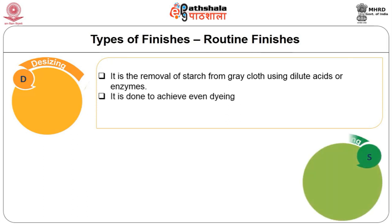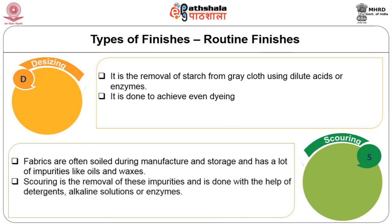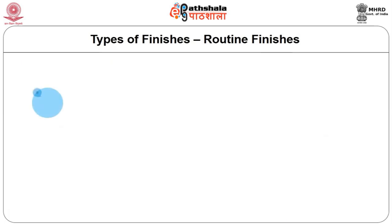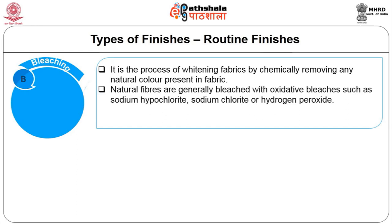Scouring or cleaning — fabrics are often soiled during manufacture and storage and have many impurities like oils and waxes. Scouring is the removal of these impurities using detergents, alkaline solutions or enzymes. The absorbency, smoothness and neatness are enhanced after cleaning. Bleaching is a process of whitening fabrics by chemically removing any natural color present. Natural fibers are generally bleached with oxidative bleaches such as sodium hypochlorite, sodium chloride or hydrogen peroxide.